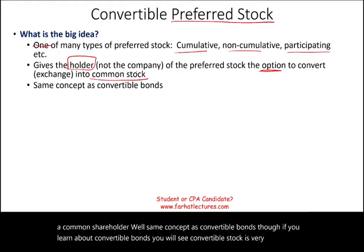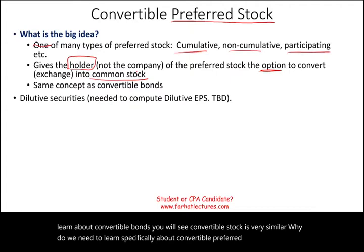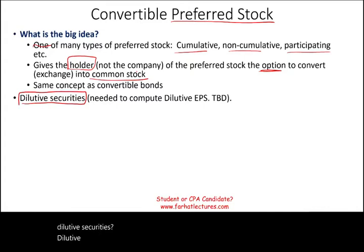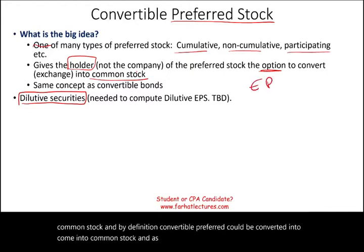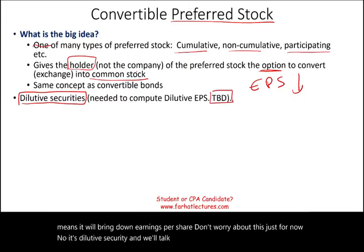Why do we need to learn specifically about convertible preferred? The reason is simple: convertible preferred are considered dilutive securities. Dilutive securities are securities that could potentially be converted into common stock, and by definition, convertible preferred could be converted into common stock. As a result, it could dilute earnings per share — meaning it will bring down earnings per share. For now, just know it's a dilutive security. When we talk about earnings per share, we'll explain with details and figures how that works.